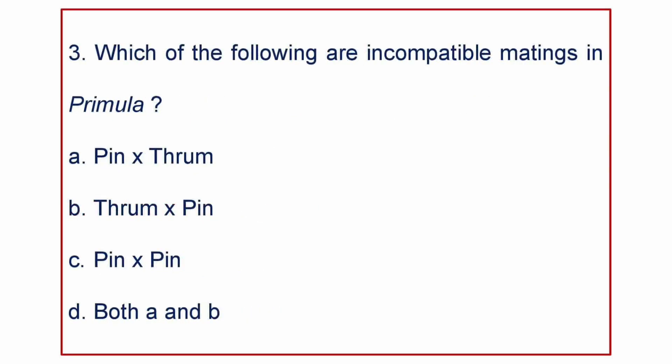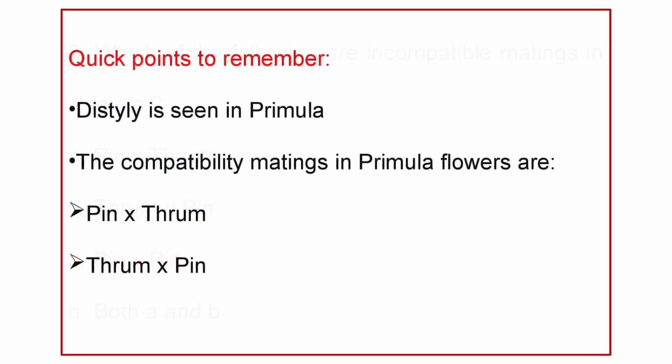Next question. Which of the following are incompatible matings in Primula? A. Pin with thrum flowers, B. Thrum with pin flowers, C. Pin with pin flowers, or D. Both A and B. Pin with pin flower matings are incompatible in Primula. Some quick points to remember: Distyly is seen in Primula. The compatible matings in Primula flowers are Pin with thrum type and thrum with pin type. Tristyly is seen in Lythrum species.